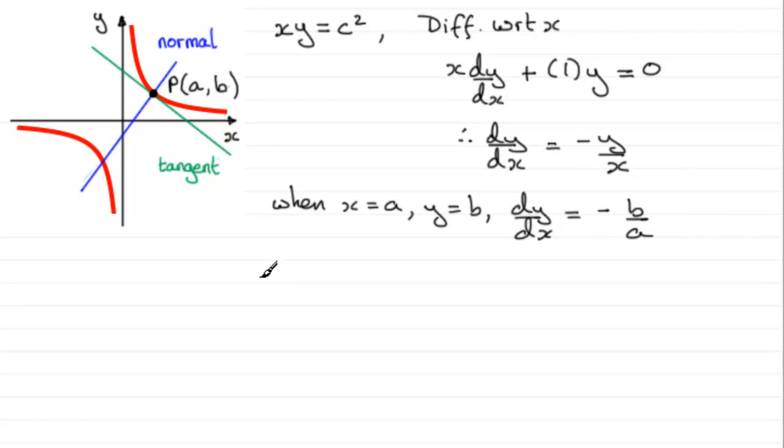So therefore, when it comes to working out the equation of the tangent, the equation of the tangent at P is going to be, well, I'm going to use the form for the equation of a line Y minus Y1 equals M, the gradient, times X minus X1.